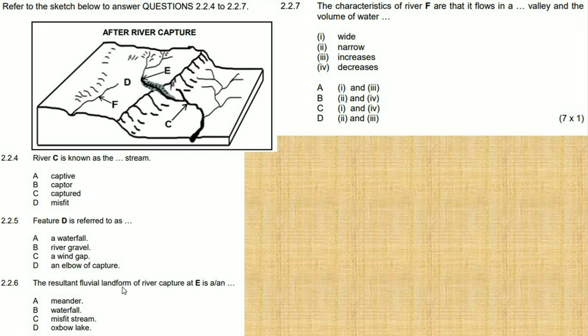So 2.2.6: The resultant fluvial landform of a river captured at E is... At E, remember I said when river C erodes this steepness or this watershed, it forms a waterfall. So your answer there is B, the resultant fluvial landform. So that's what's important over there. If I was in an exam, I will highlight this so I remember all my fluvial landforms. So that's a waterfall.